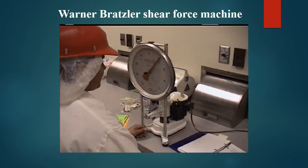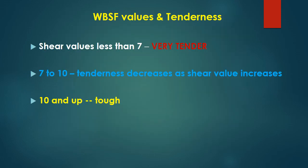In the Warner-Bratzler shear force machine, a core or bore of sample is placed in a designated area and a cutting device shears through it. The force required is shown on a round scale on the machine, from which the amount of force is measured and recorded. Regarding Warner-Bratzler shear force values: if the force is greater, the meat is tougher; if less, it is softer. For normal meat, a shear force value of less than 7 kg indicates very tender meat; 7 to 10 kg indicates reduced tenderness; and above 10 kg is considered tough meat.